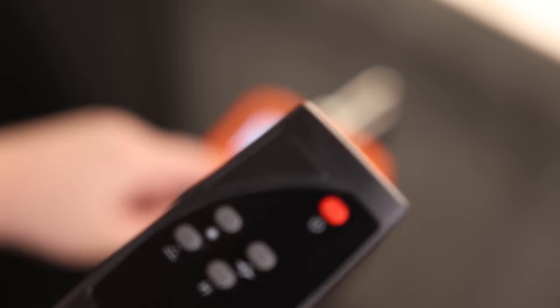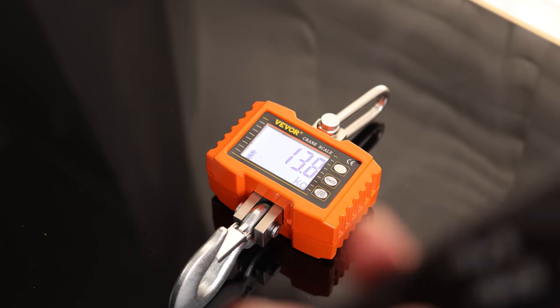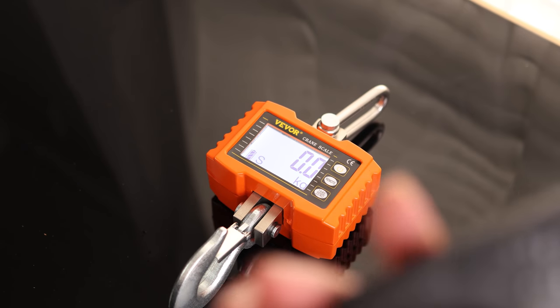And then this is the zero. So if we don't want to use the zero on the crane, we can use zero on the remote. And then if we want to take the hold off, we can either wait 30 seconds or we can just press it again.